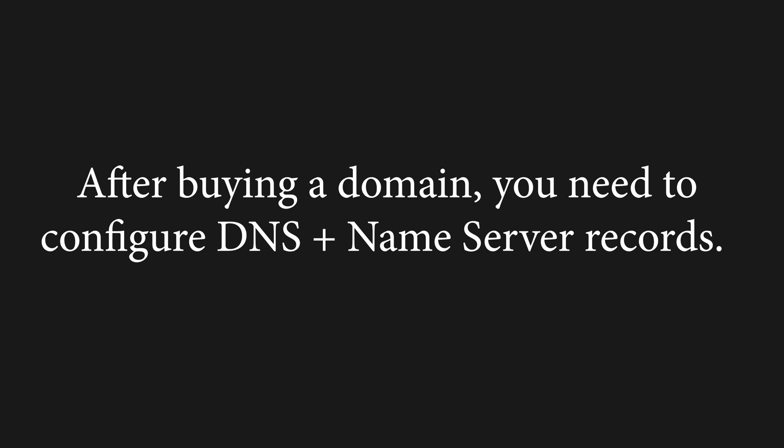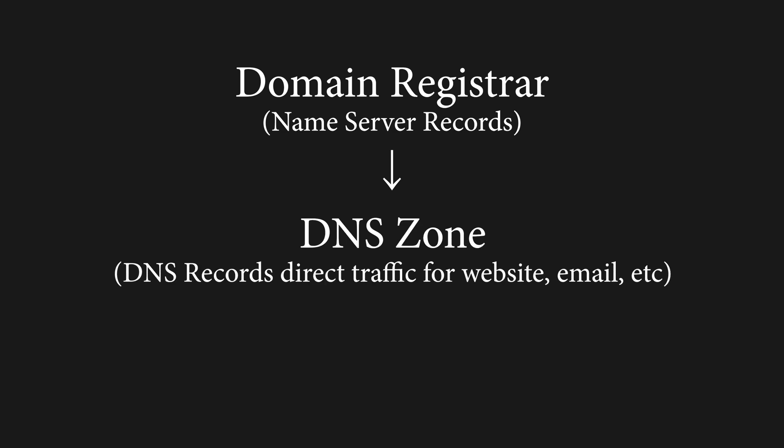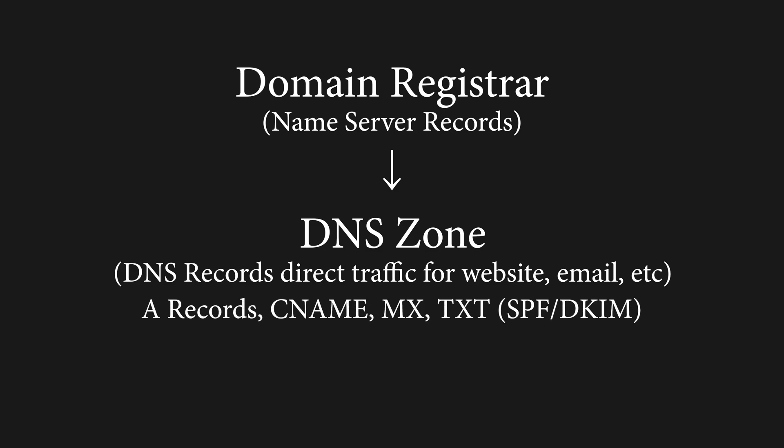For every new domain, the first step is properly directing incoming traffic by configuring DNS records, and specifically name server records. In this video, I'm going to explain a bit about what name server records are, why they're important, and show you how you can configure name server records after buying your domain. Name server records are a special type of DNS record that specifies the DNS zone for your domain, which is where all the traffic for your domain will be directed. The DNS zone is where you'll manage all of your other DNS records, like A records, CNAME records, and more.